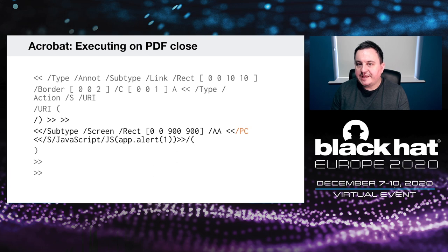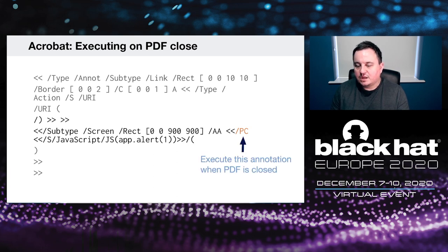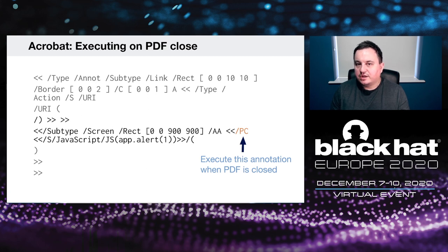There is also a PC dictionary key, which executes when the PDF is closed. So you can do a blind PDF injection, the victim opens the PDF, and you know when the victim opened it and when they closed it. It is super powerful.